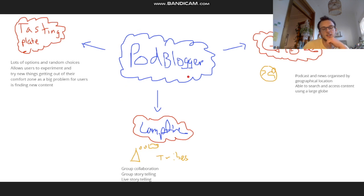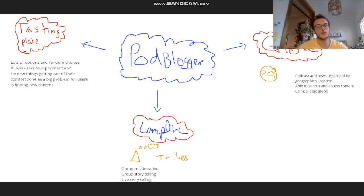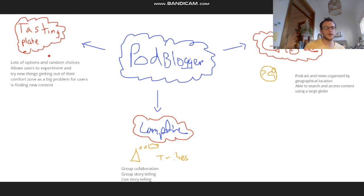For my ideation and creative process, here we see a mind map where I had three ideas. I had the idea of a tasting plate or smorgasbord, because one of the biggest problems I found for users is that it's hard for them to find new content without word of mouth. The idea of a tasting plate and smorgasbord is that there's lots of different content presented to you, and you can try a piece of each one and see what you like.